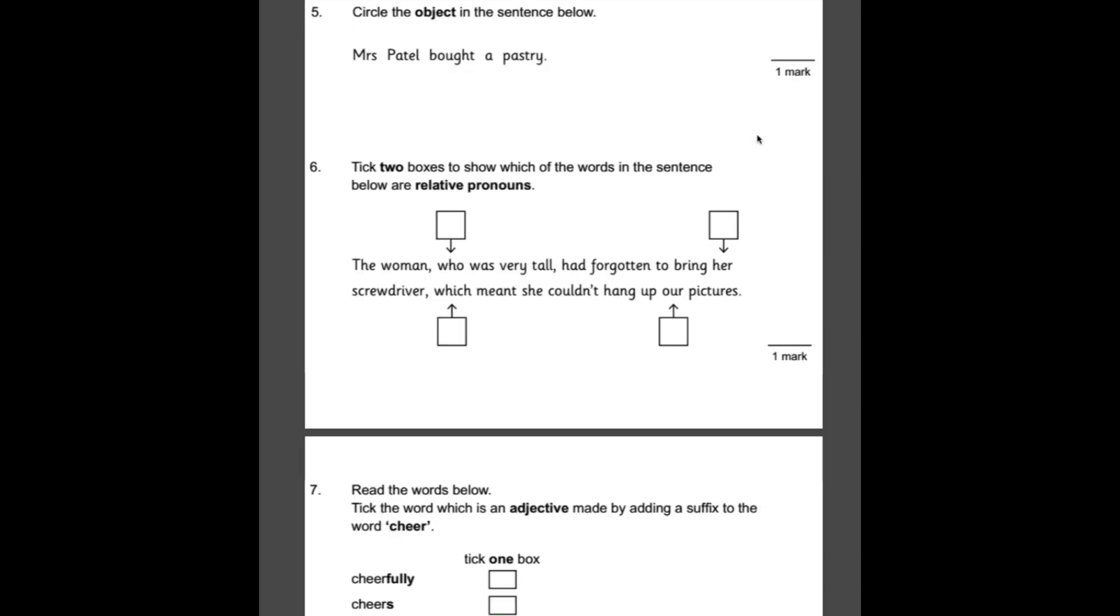Number five, circle the object in the sentence below. So Mrs. Patel bought a pastry. The subject of the sentence would be Mrs. Patel. That's who it's about. And she's buying a pastry. She's bought a pastry. The thing that she has bought, the object, is a pastry. So that is your object.